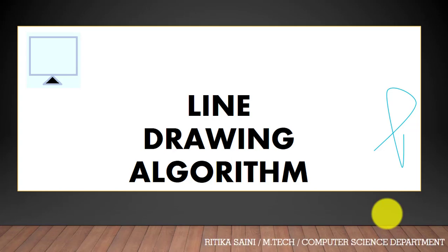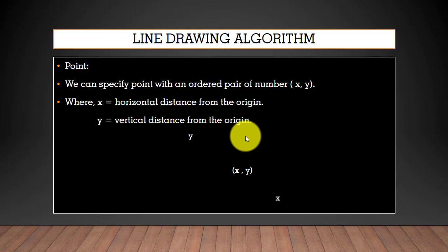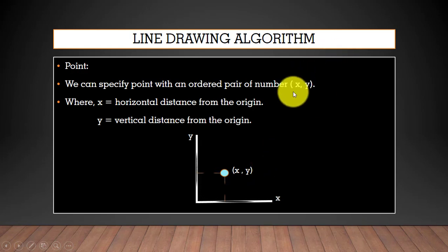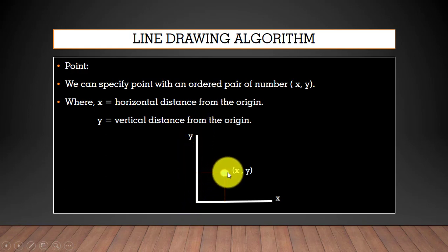In this video you will learn the line drawing algorithm. As we discussed before about points, a point has two attributes: its color and its size, and we can specify a point with an ordered pair of numbers X and Y. Here you can see this is the point — X is the horizontal distance from the origin, and Y is the vertical distance from the origin, and this is the position of the point in the coordinate system.